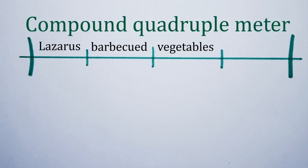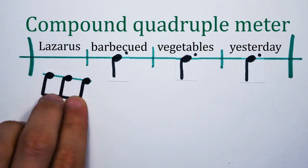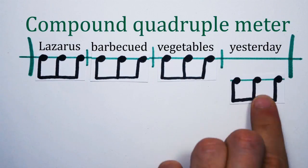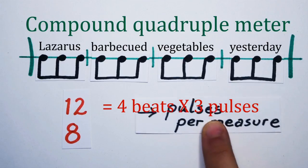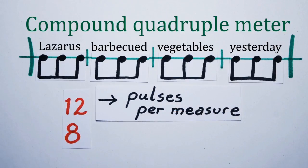Lazarus barbecued vegetables yesterday. We have four beats with three pulses per beat. The top figure of the time signature will be a twelve, since we have a total of four times three equals twelve pulses for one measure, and the bottom figure will stay an eight.